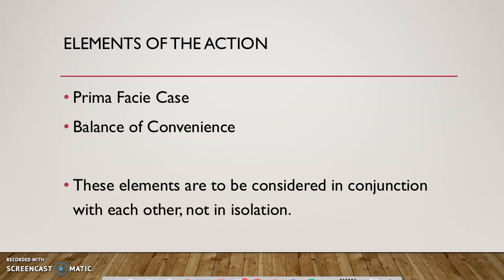A successful application for an interlocutory injunction will have to satisfy two elements. The plaintiff must be able to show they have a prima facie case, and show that the balance of convenience is in their favour. Courts will consider these elements in conjunction with each other, not in isolation, to reach a decision on the application.